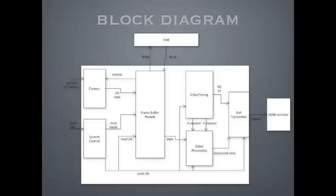This is the diagram of our project. You can see that in the middle there is the main board, and also there are DDR memory and HDMI monitor. In the upper left, there is the camera module — it controls and communicates with the camera. And below it, there is the system control module, which takes charge of all the global reset and clocks.